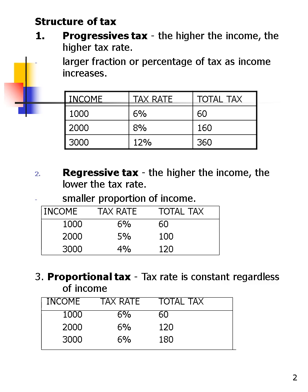The second one is regressive tax. Regressive means the higher the income, the lower the tax rate — it's a negative relationship, smaller proportions of income. For example, if your income is one thousand and increases to two thousand, your tax rate reduces from six to five percent. The last one is proportional tax. Proportional means constant — the tax rate charged is constant and fixed regardless of income. Your income could be one thousand, two thousand, or three thousand, and you have a flat tax rate of six percent across the board.